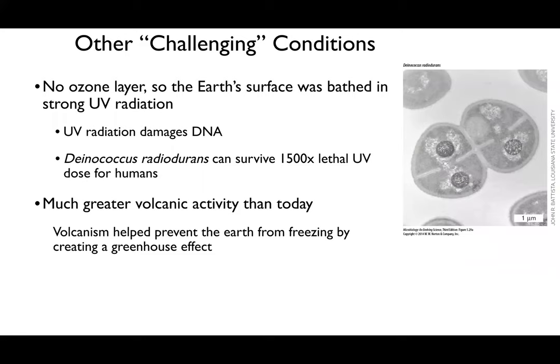In addition to constant bombardment, early Earth had other challenging conditions, including the lack of an ozone layer. The ozone layer is a layer of gas in our atmosphere that protects us from ultraviolet light. Ultraviolet light is a type of radiation from the sun that damages DNA—it's what causes skin cancer. There are bacteria, particularly Deinococcus radiodurans, that can survive 1,500 times the lethal UV dose that would kill a human being.